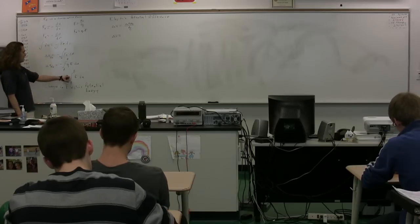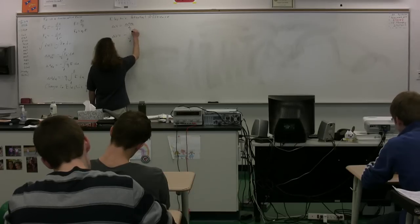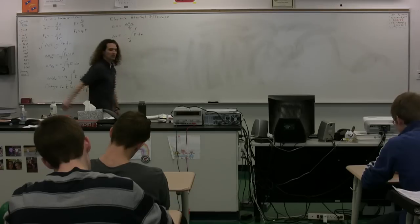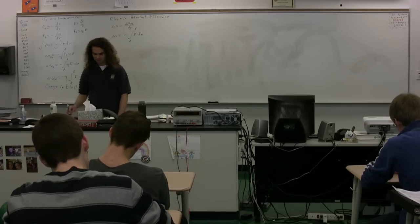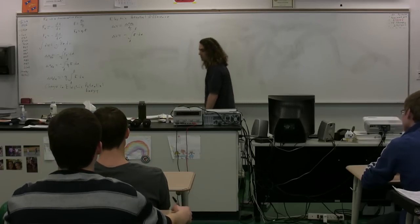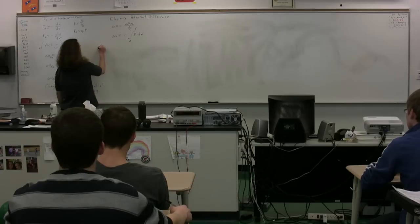Well, if we divide by Q, we just get negative of the integral from A to B of the electric field dot product with respect to position. This is called the electric potential difference. And notice that we no longer have the test charge in here.